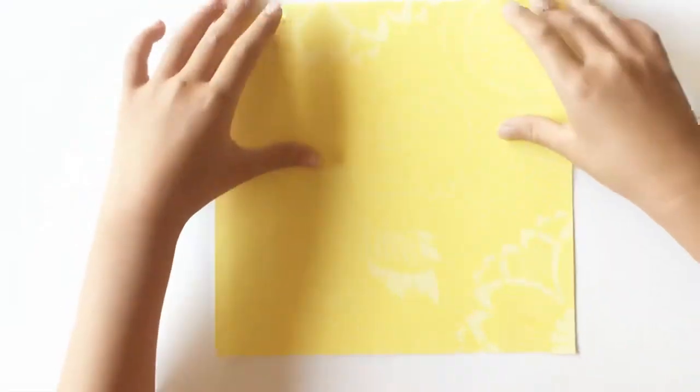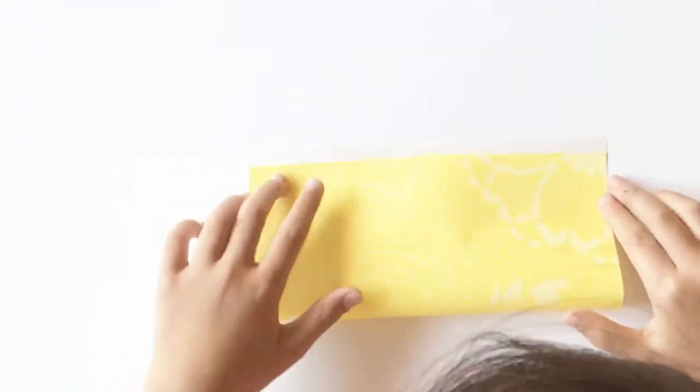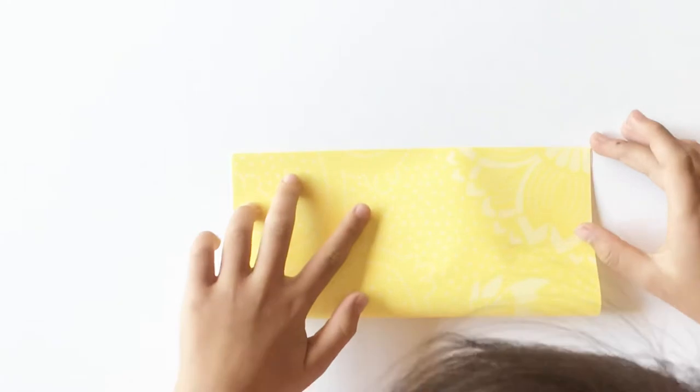First, get your origami paper and turn it around to the white side. Then fold it in half and crease the edge.